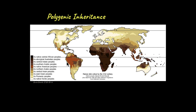This map shows the distribution of skin color across the world among different populations. From this, you can see that there is a continuous range of skin color — skin color is not like a one, zero, yes or no kind of pattern that is expressed, unlike the flower color in Mendel's experiments with pea plants.